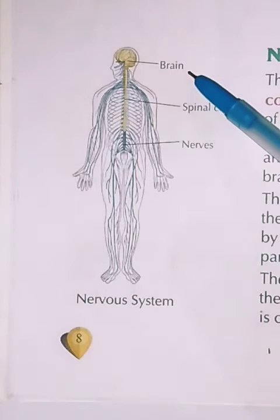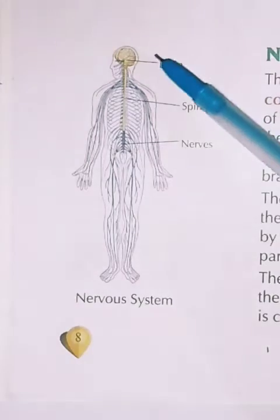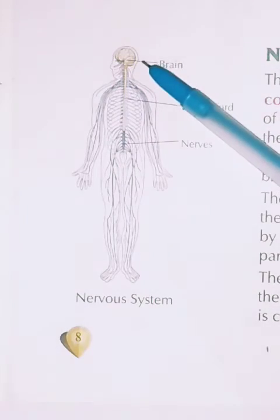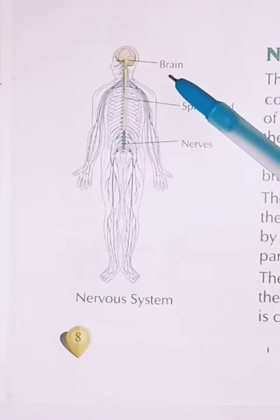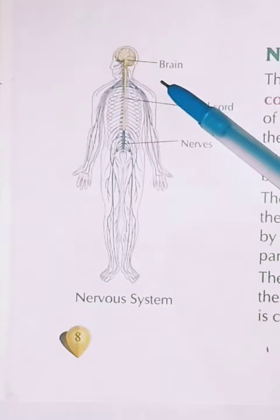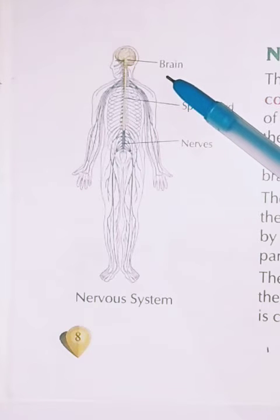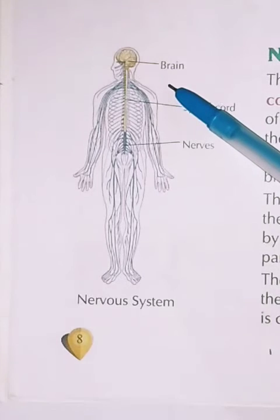The brain controls all the activities of our body. It is present in our head and it is protected by the skull. If you touch your head and feel it, you will feel a bone structure — that is the skull.